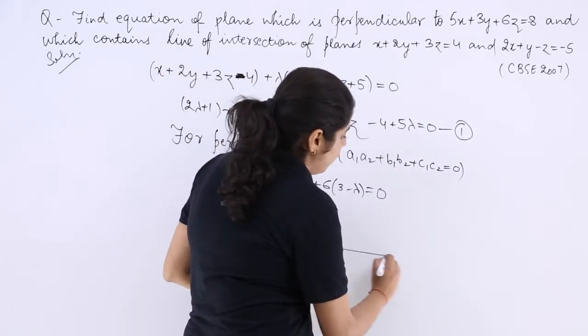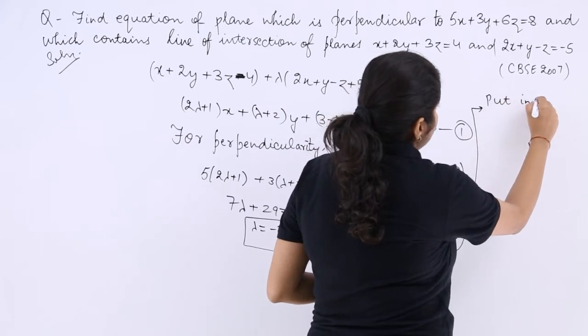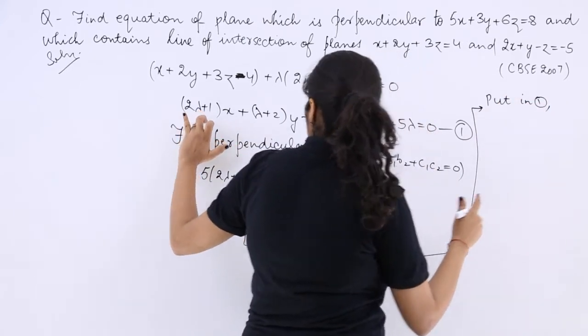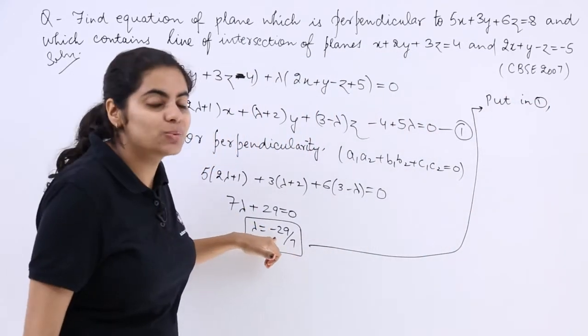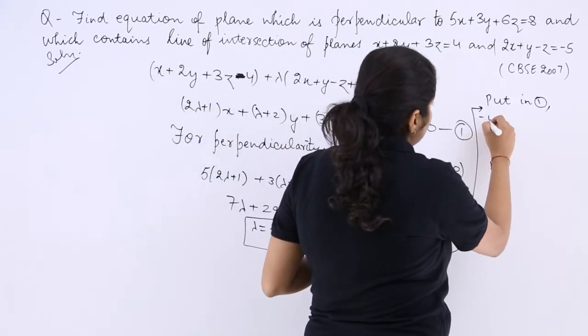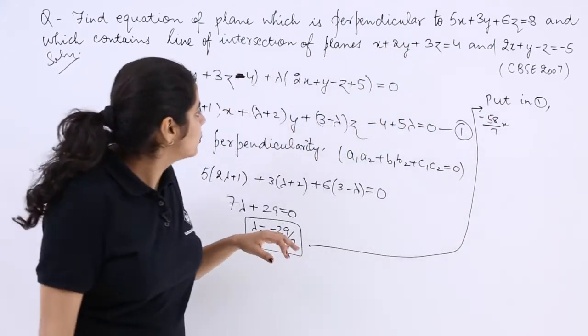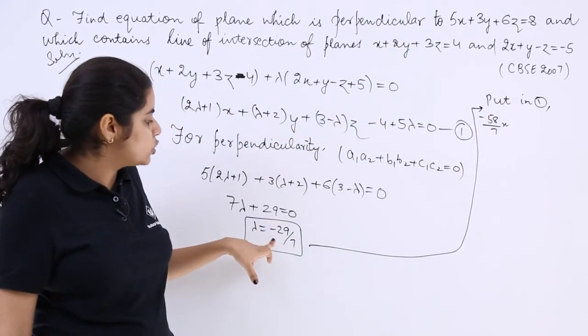Put in equation 1. So 2 lambda plus 1, now 2 into minus 29 by 7, which is minus 58 by 7, multiply by x. Then lambda plus 2, minus 29 plus 14, so minus 15 over 7 y.